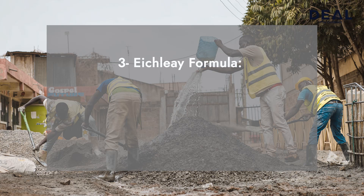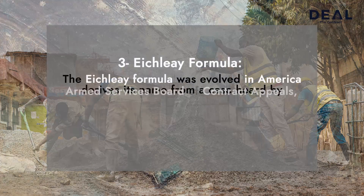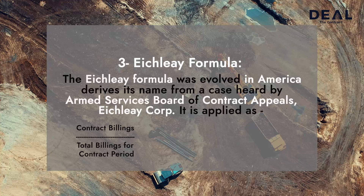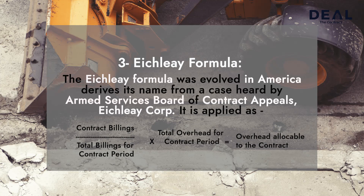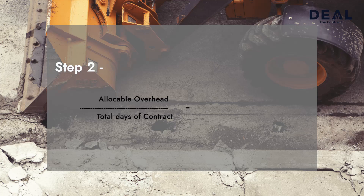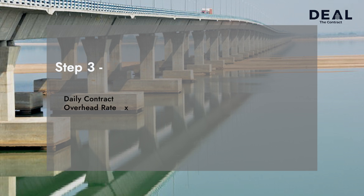3. Eichleay Formula: The Eichleay Formula was evolved in America and derives its name from a case heard by the Armed Services Board of Contract Appeals — Ashley Corporation. It is applied as follows. Step 1: Contract billings divided by total billings for the contract period, multiplied by total overhead for the contract period, equals overhead allocable to the contract. Step 2: Allocable overhead divided by total days of contract equals daily overhead rate. Step 3: Daily contract overhead rate multiplied by number of days of delay equals amount of unabsorbed overheads.